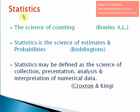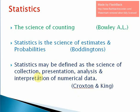There are various definitions given by different statisticians. According to Bowley, statistics may be called the science of counting. According to Boddington, statistics is the science of estimates and probabilities. The well-known definition given worldwide is by Croxton and Cowden: statistics may be defined as the science of collection, presentation, analysis, and interpretation of numerical data.